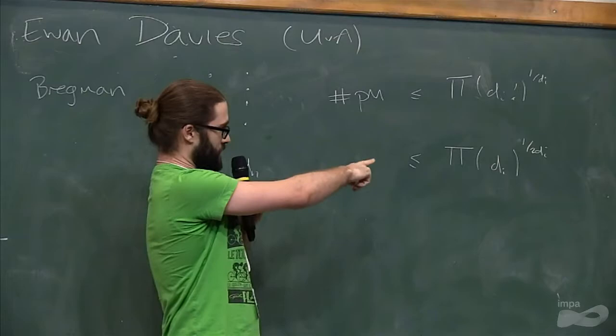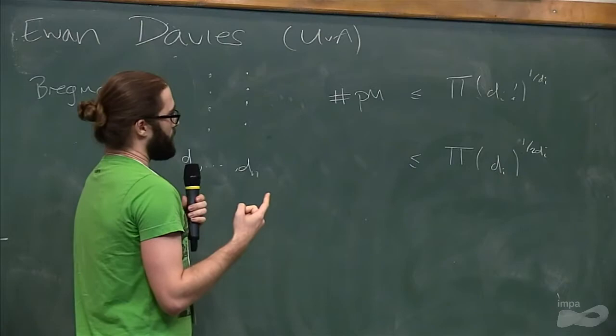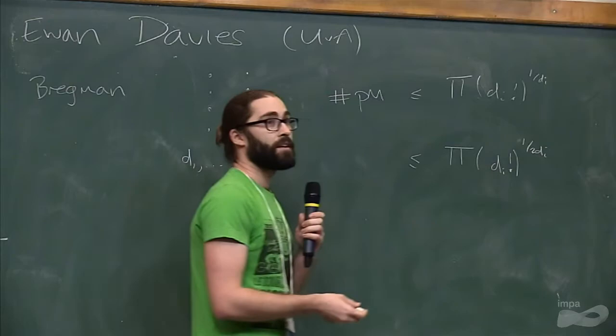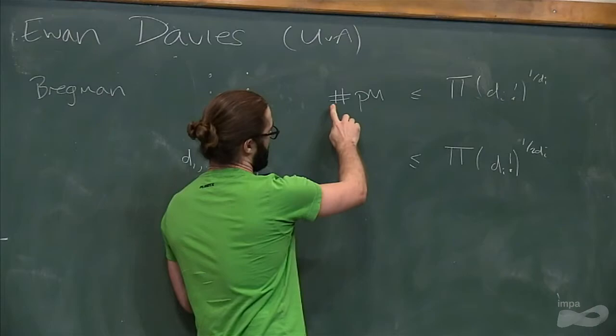And based on some work that I've done, this looks a little bit suggestive. So this Dᵢ factorial is the number of perfect matchings in a K_{Dᵢ,Dᵢ}. And I would guess that we can actually bound the matching polynomial, which I'll define in a second, with a similar bound.